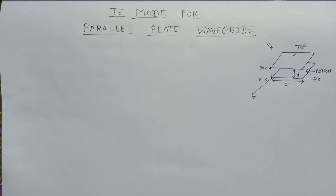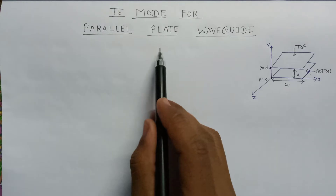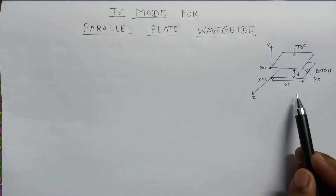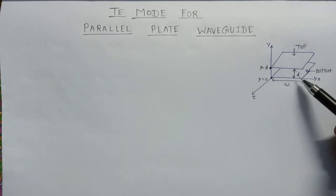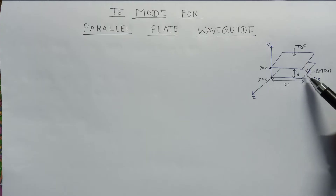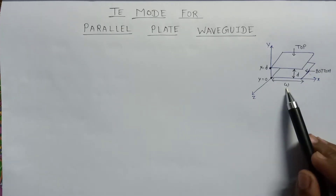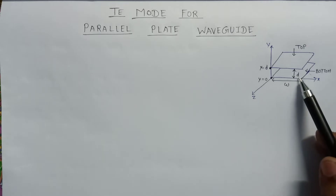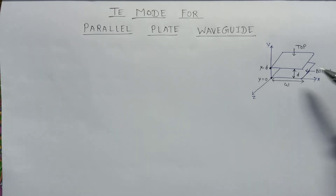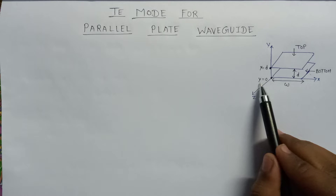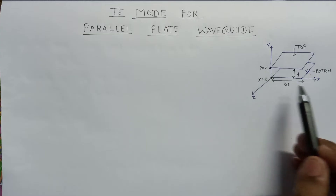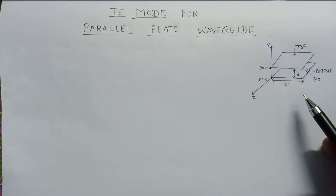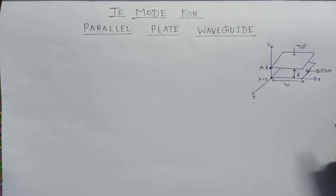Welcome. In this lecture we are going to study about TE mode for parallel plate waveguide. This is a structure for parallel plate waveguide in which there are two plates parallel to each other — a top plate and a bottom plate. The width of this plate is equal to W, and these plates are separated by a distance equal to D. In between these two plates, a dielectric material is filled. The bottom plate is placed at y equals zero and the top plate is placed at y equals D.